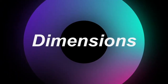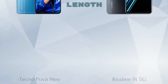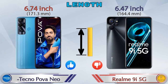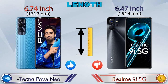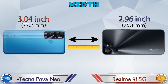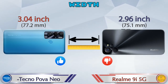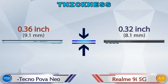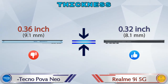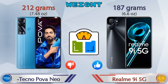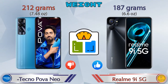Now let's check the dimensions. The length of the Pova Neo is 6.74 inches and the 9i 5G is 6.47 inches, which is less than the Pova Neo. Width: Pova Neo is 3.04 inches and the 9i 5G is 2.96 inches. Thickness: Pova Neo is 0.36 inches and the 9i 5G is 0.32 inches. Weight: Pova Neo is 212 grams and the 9i 5G is 187 grams.